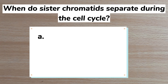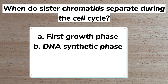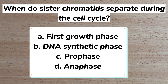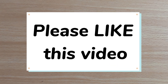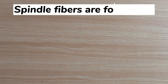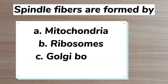Number 7. When do sister chromatids separate during the cell cycle? A first growth phase, B DNA synthetic phase, C prophase, D anaphase. Answer: D anaphase.